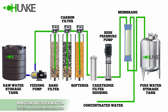First, water is sent from the raw water tank by the feeding pump to the sand filter to remove bigger particles and suspended solids — we use quartz sand or special filter media. Second, water goes to the carbon filter to remove odor, taste, organic compounds, and chlorine — we use activated carbon or anthracite.